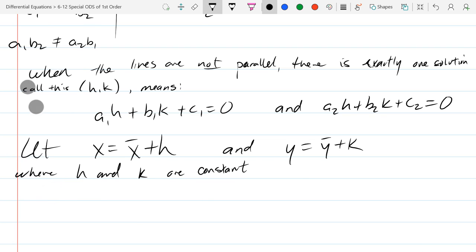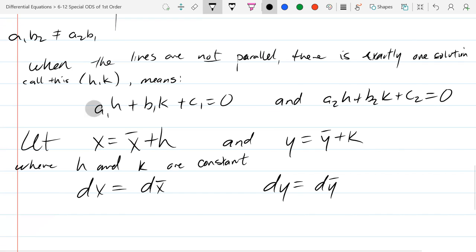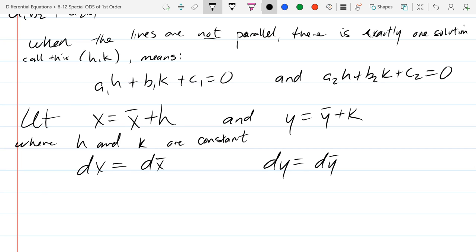So this means a1h plus b1k plus c1 equals 0. And a2h plus b2k plus c2 equals 0. That's what it means to be a solution. You satisfy both of those equations with that hk. So now we're going to start making some substitutions. So we're going to let x equal x bar plus h and y equal y bar plus k. And it's important to note that h and k are constant. So when you take a derivative, h and k, their derivatives are going to be 0. So of course if you're going to sub out x and y, you're going to need to sub out dx and dy.